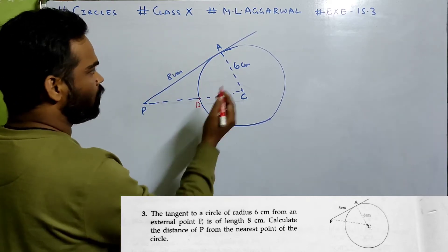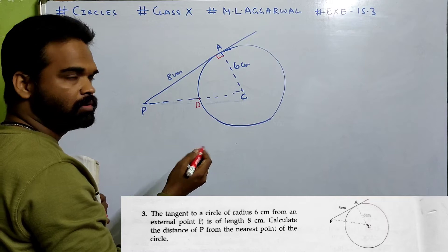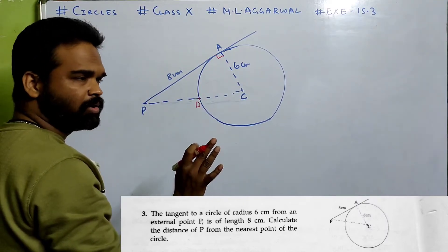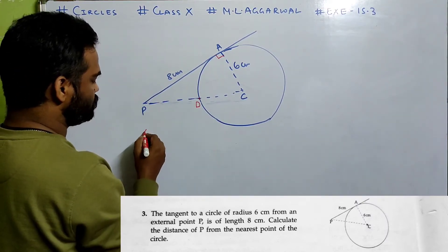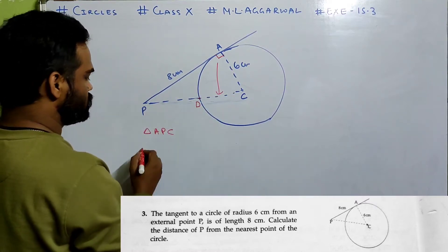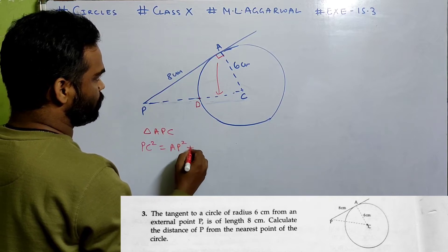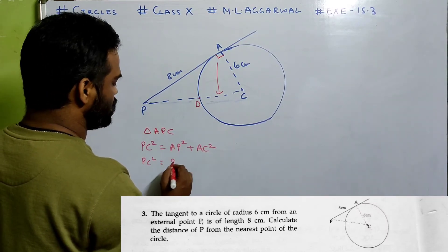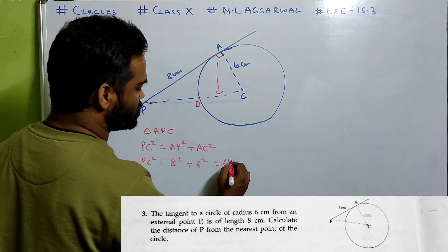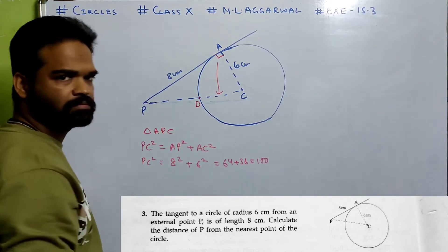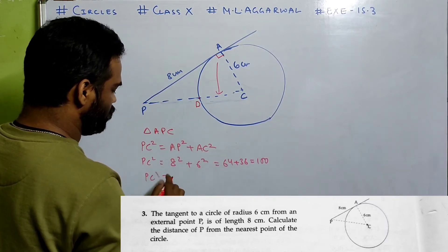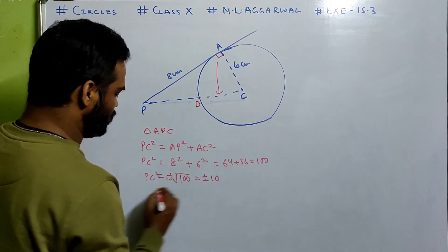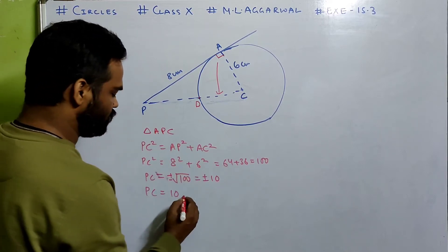They want DP, not CP. We know the angle is 90 degrees — tangent and radius are perpendicular. In triangle APC, PC is the hypotenuse: PC² = AP² + AC². So PC² = 8² + 6² = 64 + 36 = 100. Therefore PC = ±√100 = ±10. Taking the positive value, PC = 10 cm.